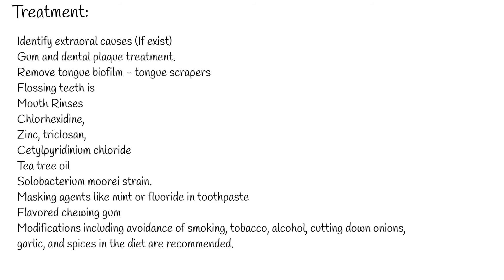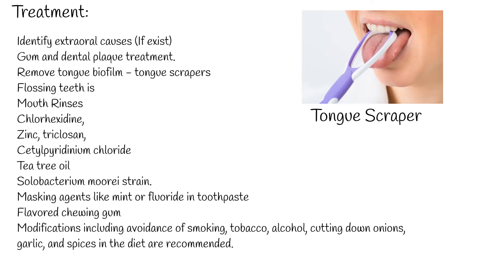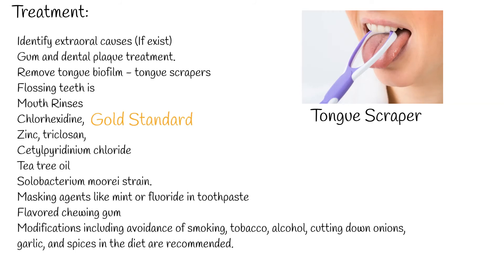Lifestyle modifications including avoidance of smoking, tobacco, and alcohol, as well as cutting down on onions, garlic, and spices in the diet are recommended. Patients should be encouraged to increase their fluid intake. Tongue scrapers are shaped according to the anatomy of the tongue and reduce VSCs by 75%, compared to only 45% using a toothbrush. Interdental cleaning is also necessary to control plaque and oral microorganisms, as failure to floss leads to a significantly high incidence of malodour.